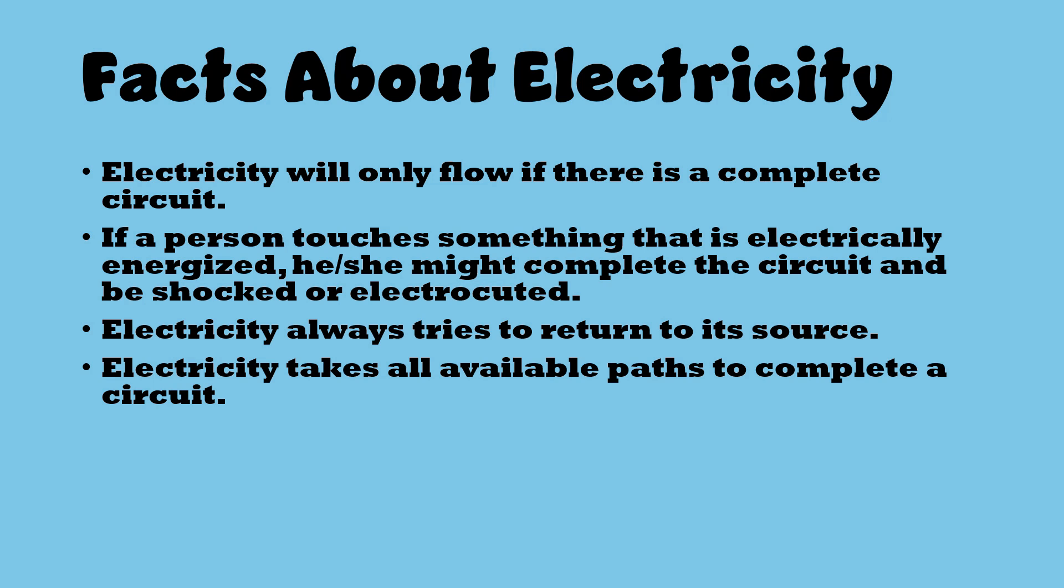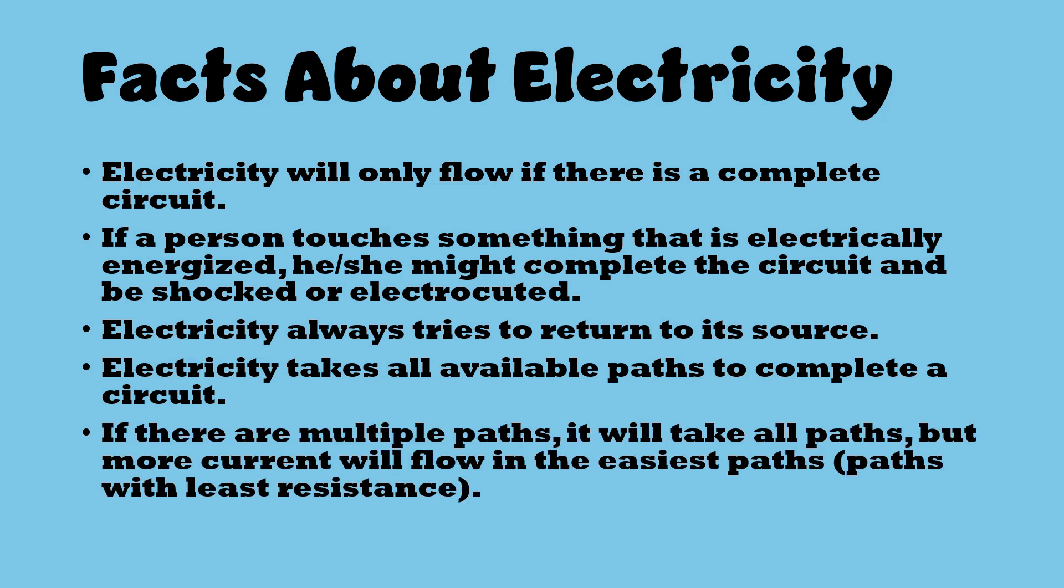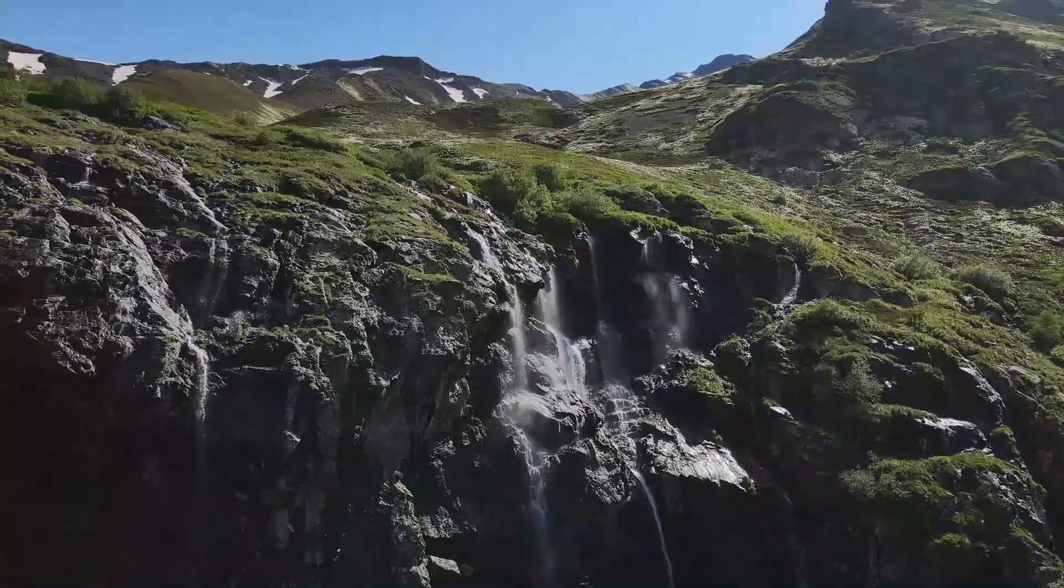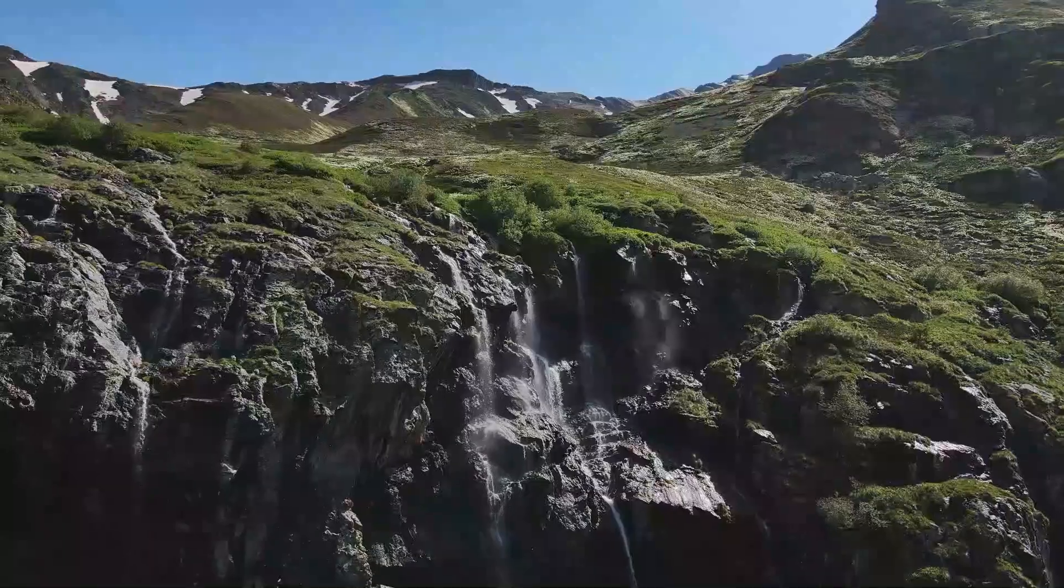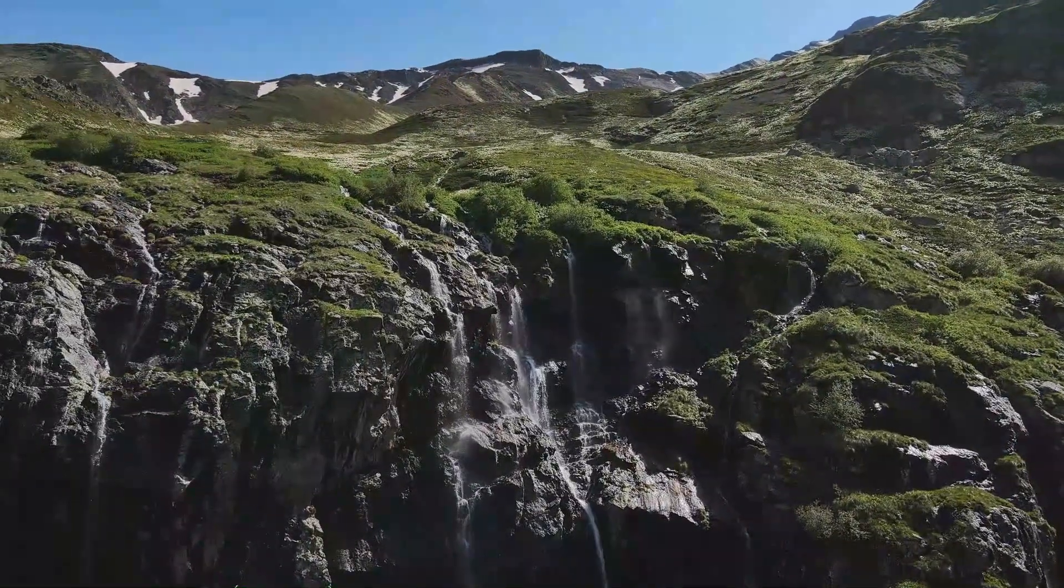Fifth, building on number four, more current will flow through paths of least resistance. Imagine water flowing down a mountain or a hill. There's often a main flow, but other smaller streams or tributaries branching off. The same is true for electricity.